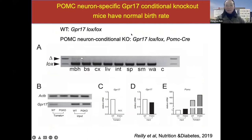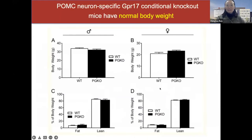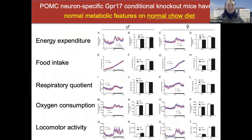Student Austin Riley characterized the function of GPR17 in POMC neurons by generating POMC-specific GPR17 knockouts. POMC neurons are only a small fraction of all hypothalamic cells, so we see a faint signal — but when sorting out POMC neurons, expression is completely ablated in knockout animals. However, to our disappointment, on normal chow diet, both female and male animals showed virtually no difference between wild-type and knockout, even with more detailed characterization.